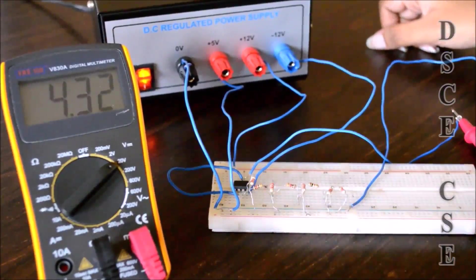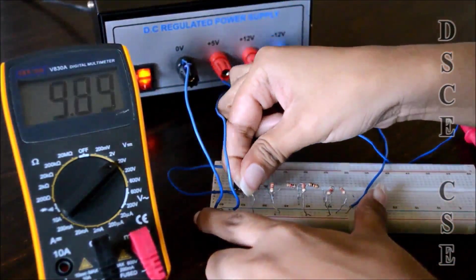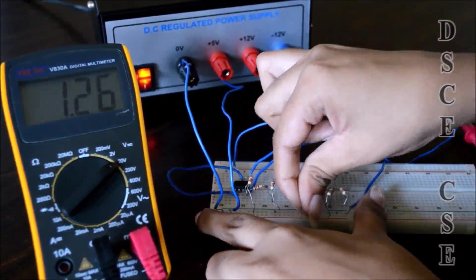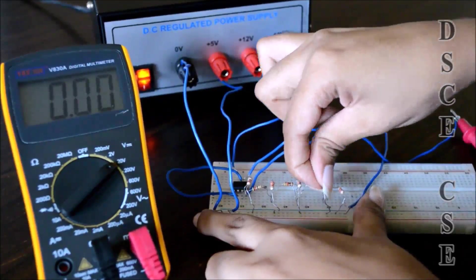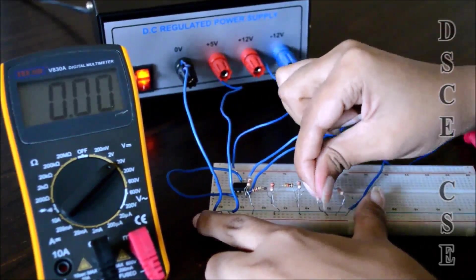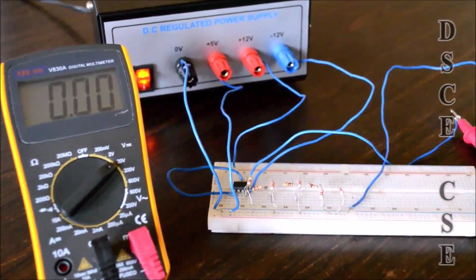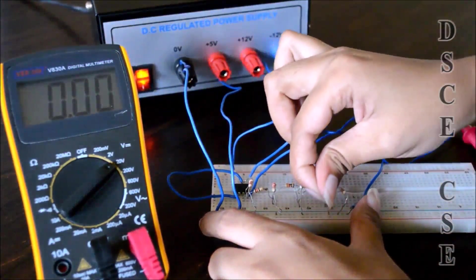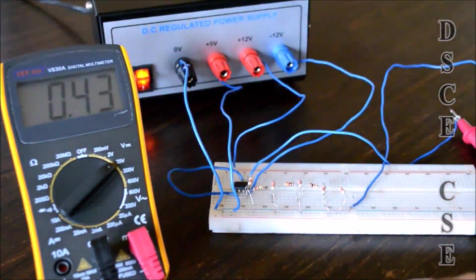Let us check the value of the output for different values of input. Let us take 0 for example. Connect all D1, D0, D2, and D3 to ground to make it as 0. The output we got is 0.43.